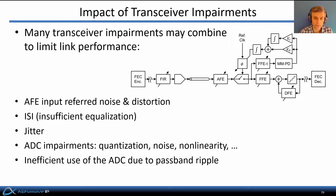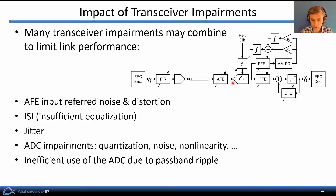Many transceiver impairments can combine to limit overall link performance in DSP transceivers. The AFE's imperfect noise and distortion combines with residual intersymbol interference, because equalization can't take care of all of it. Jitter at both the transmitter and receiver are inevitable impairments, and the ADC itself will introduce quantization noise, thermal noise, and nonlinearities as well.